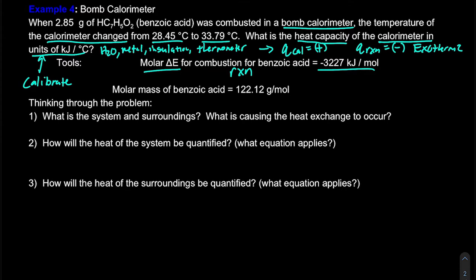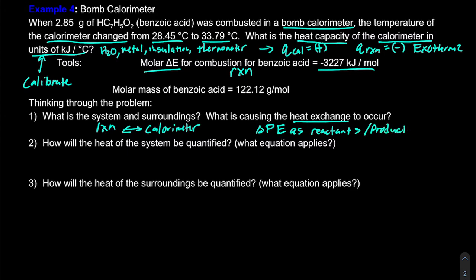Let's define our system and our surroundings because it's going to help us find heat transfer. Our system is what we're studying — that would be our reaction. Our surroundings is what's right around that — our calorimeter. So we're going to look at heat exchange between the reaction and the calorimeter. What is causing heat exchange to occur? This has to do with the change in potential energy as our reactants and products break and form bonds. That net change in potential energy is what causes energy to be released — in this case, because we know it's negative.